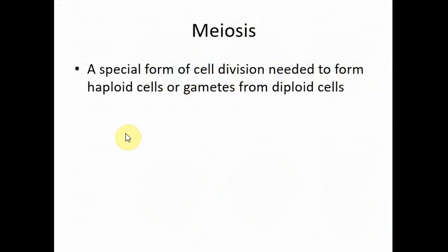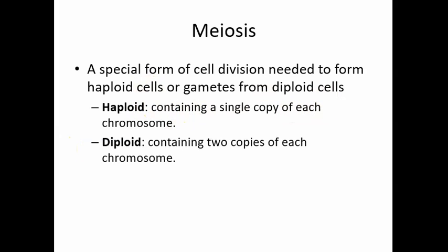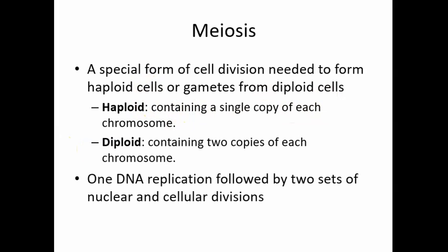Then we have meiosis. Meiosis is a special form of cell division needed to form haploid cells, or gametes, from diploid cells. Haploid means the cells contain a single copy of each chromosome, whereas diploid cells have two copies of each chromosome. In meiosis, one DNA replication is followed by two sets of nuclear and cellular divisions. It only happens when we need to make gametes — special cells needed for sexual reproduction.